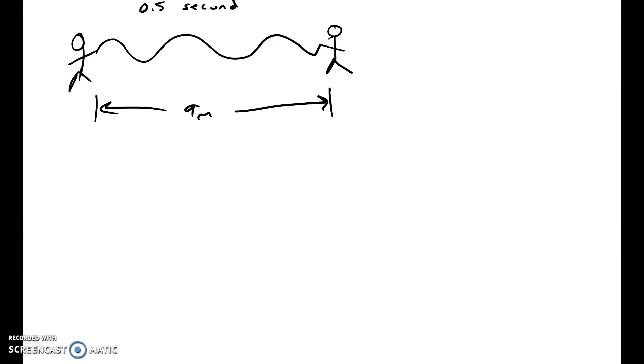And the wave made basically three waves in 9 meters. Now, if across 9 meters we have three waves, that means one of those waves is only going to be 3 meters long, because three of them would make up 9 meters. So our wavelength right there is 3 meters.